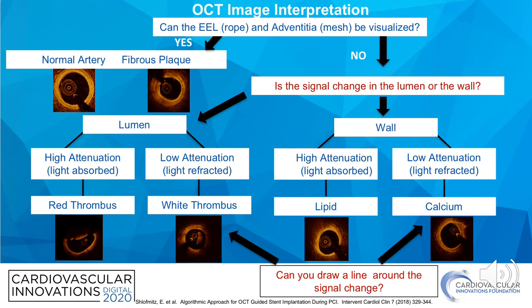The high resolution of OCT allows you to precisely measure the cap thickness in the presence of lipid, though you can't detect past the lipid to see the plaque burden and the thickness of lipid due to the high attenuation that occurs with OCT in the presence of lipid. One distinct advantage of OCT, however, in the presence of calcium, is that you're able to measure the thickness of calcium, which has important clinical implications.